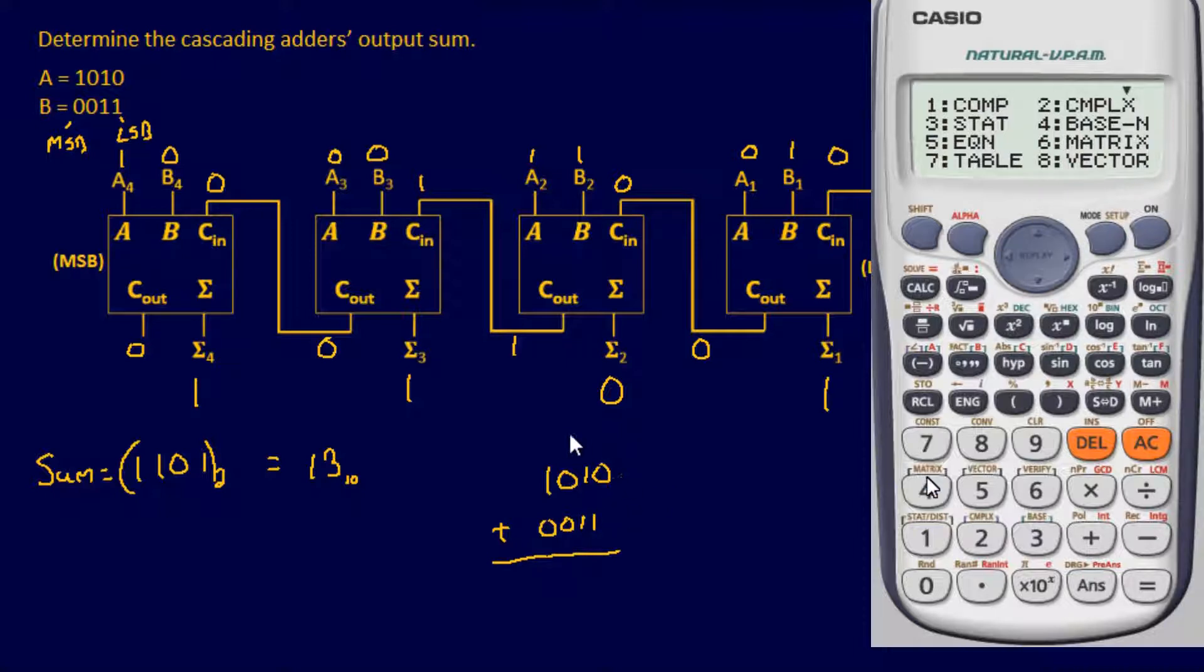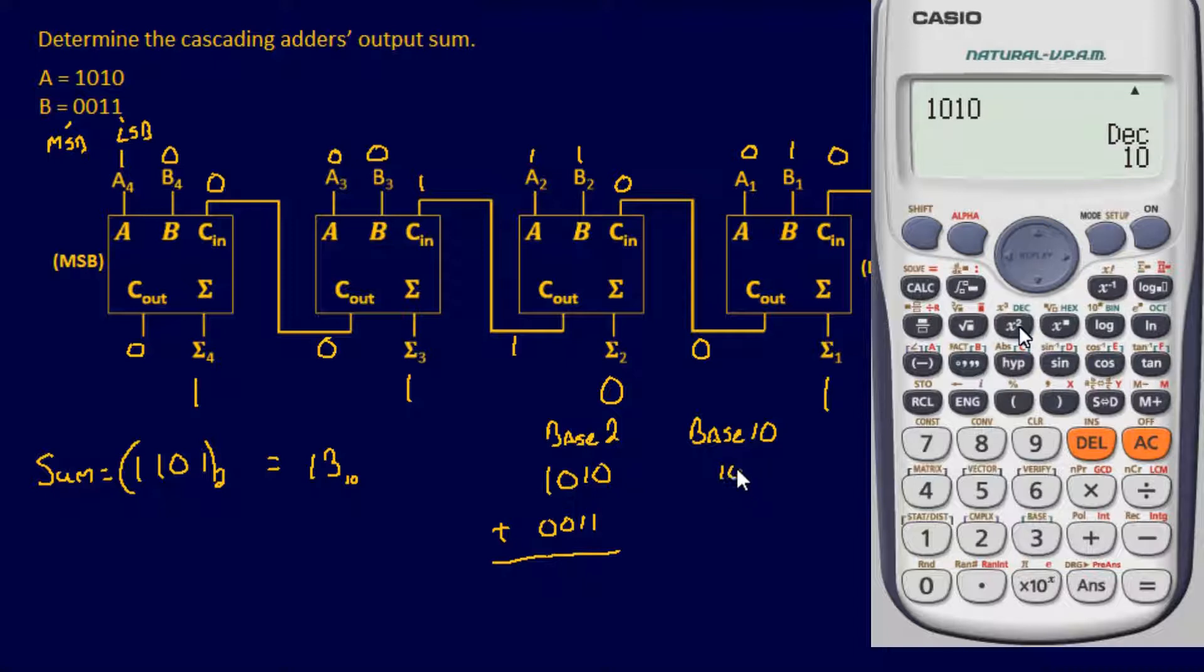So 1010 is 10 in decimal format. And 0011 is 3. So right there, that already looks pretty good. Well, just verifying it,